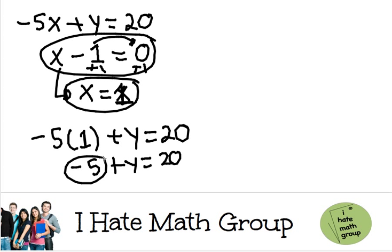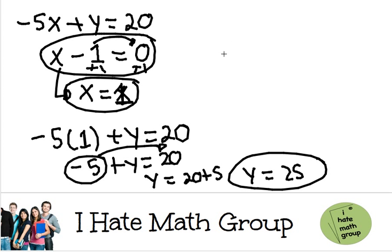Then let's solve for y by moving this negative 5 to the other side. So y equals 20 plus 5, and y equals 25. My final answer: 1, 25.